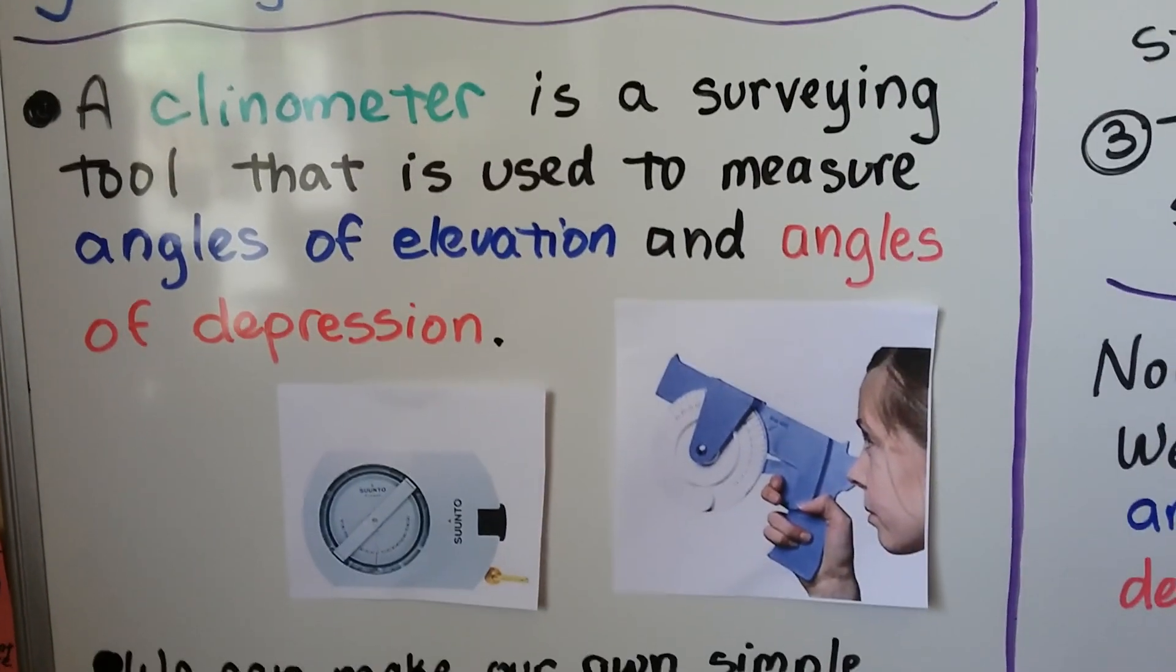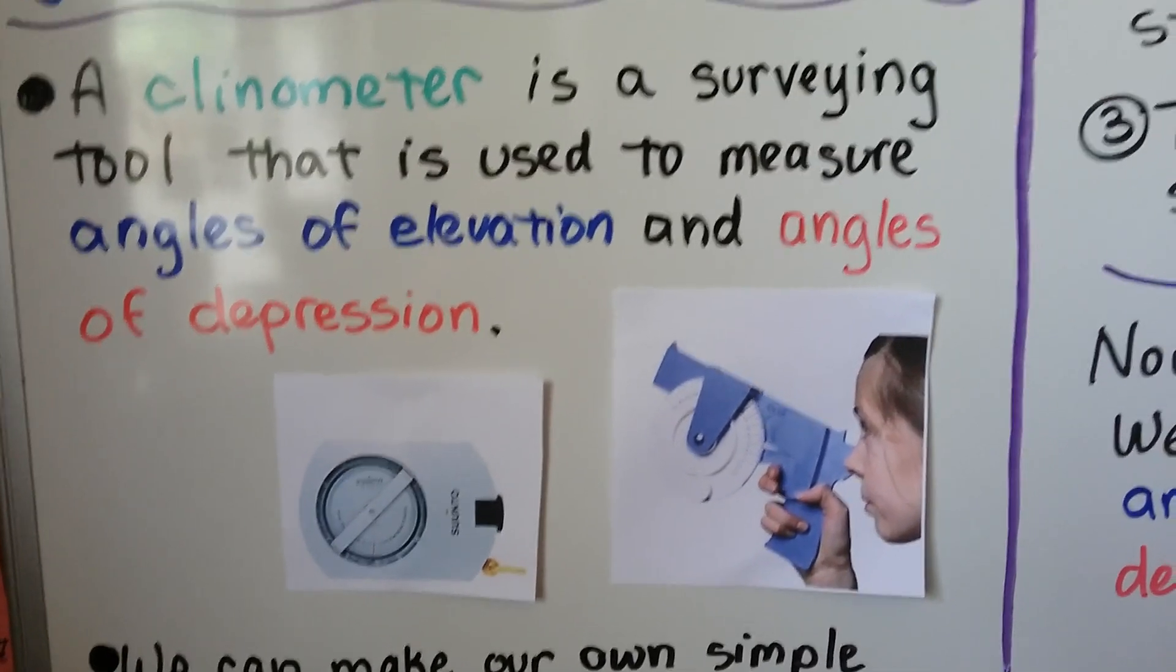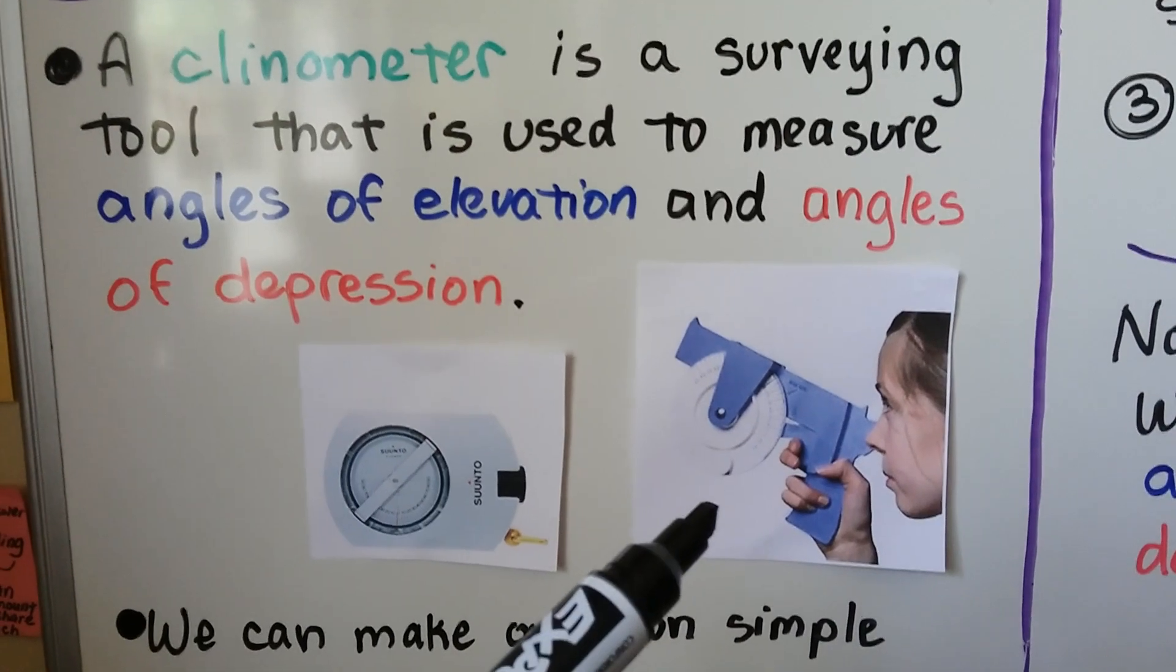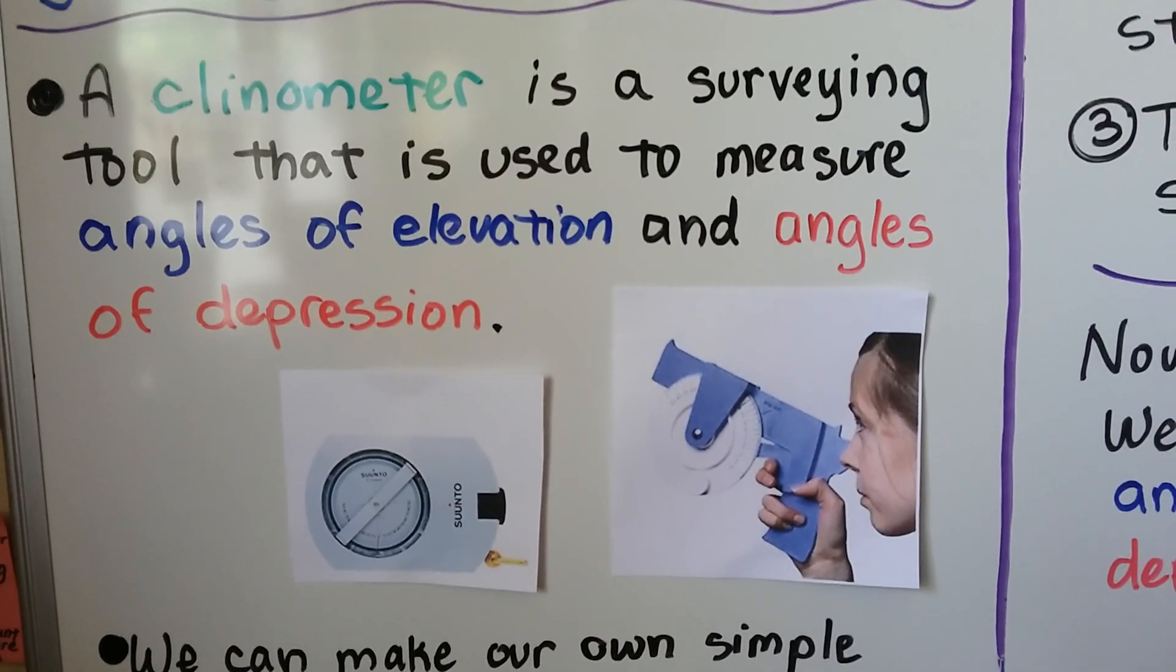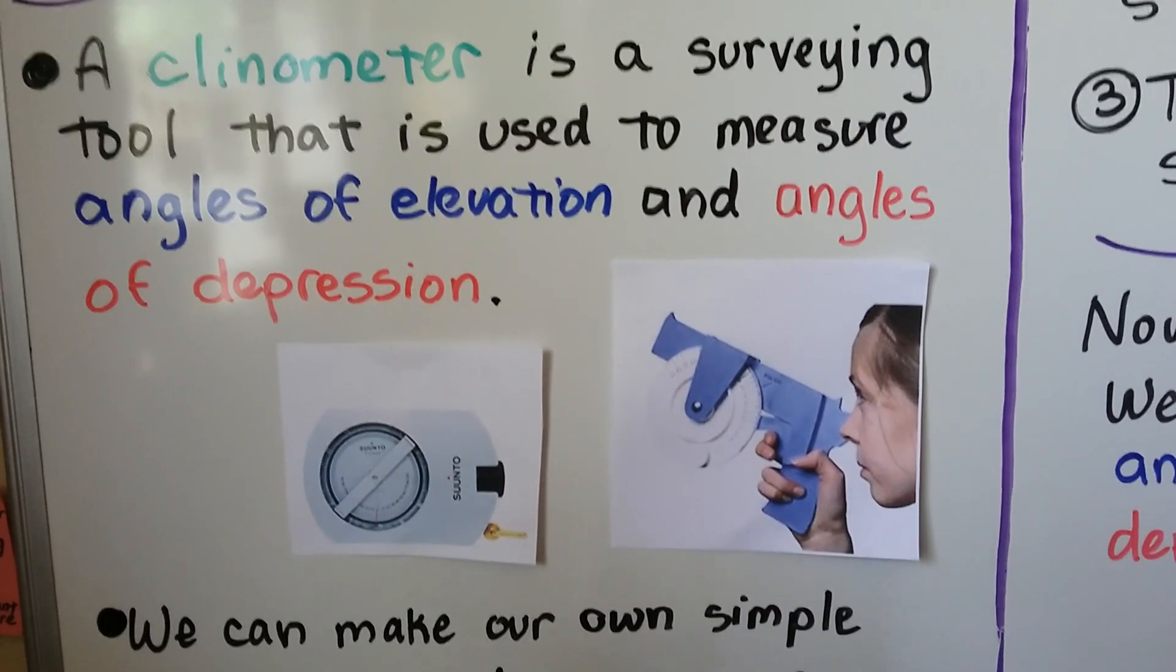A clinometer is a surveying tool that's used to measure angles of elevation and angles of depression. Here's a digital one, here's a manual one, and if you go on the internet and look for images of clinometers, you're going to see many different types, but they all basically do the same thing.